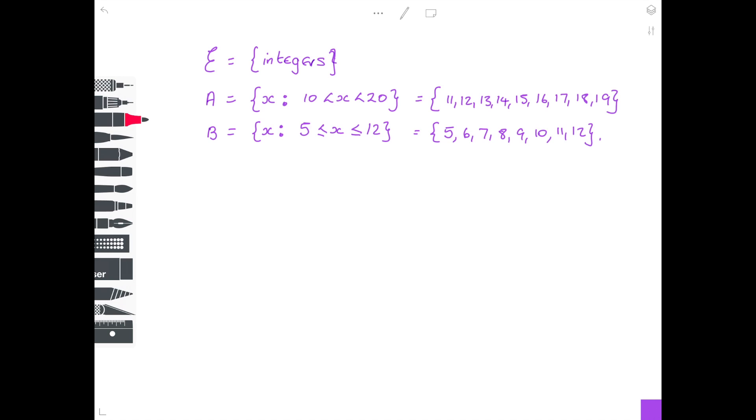So if a question wanted me to list the members of A ∩ B, intersection, if you remember, is the numbers that occur in both sets. So if I look, 11 occurs in A and 11 occurs in B, 12 occurs in A and 12 occurs in B, and they are the only numbers that occur in both set A and set B. So A ∩ B = {11, 12}.